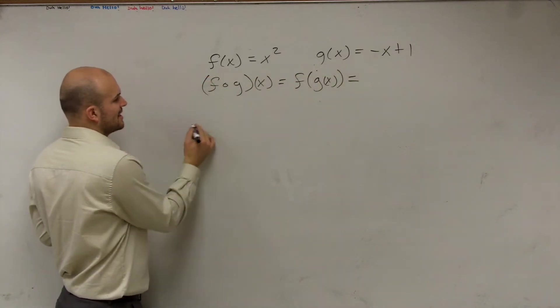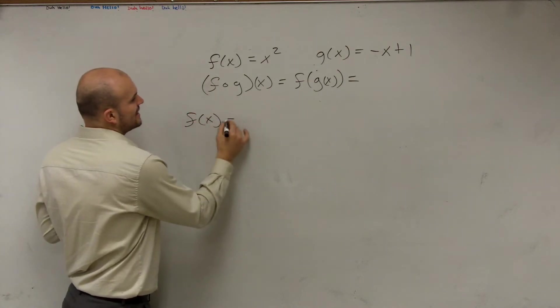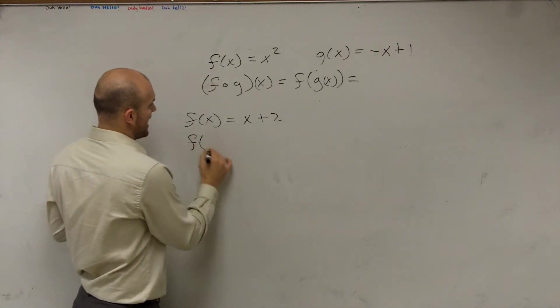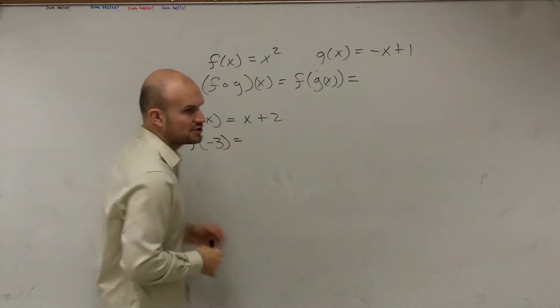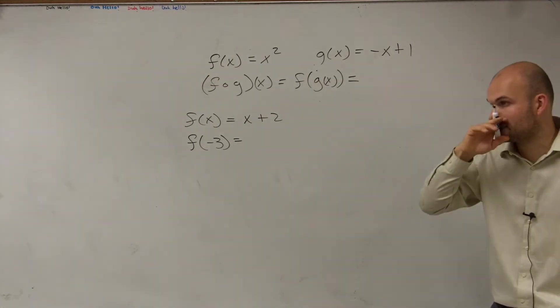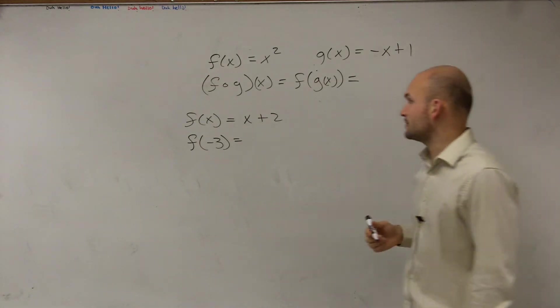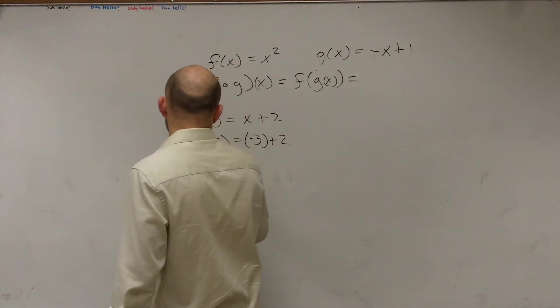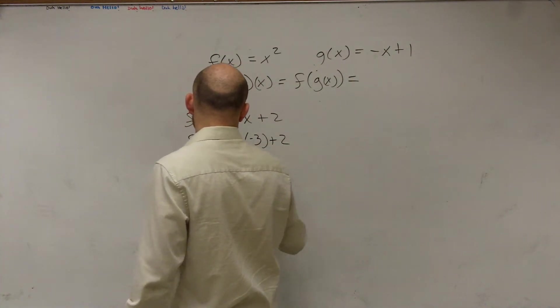If I was going to say f of x equals x plus 2, then I say, what does f of negative 3 do? So what do you do with that negative 3? If I wanted to evaluate for this, you'd plug the negative 3 of where? You plug the negative 3 into the x, right? So you say f of negative 3 equals negative 1, correct?